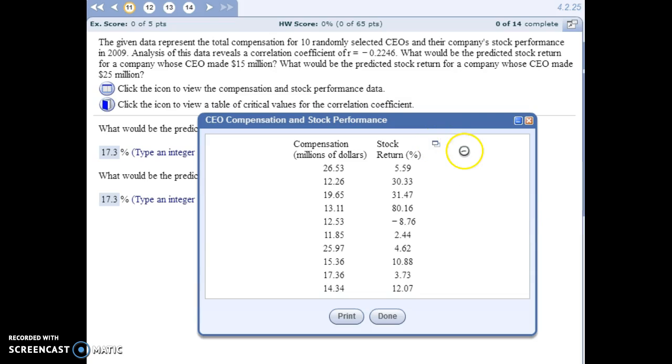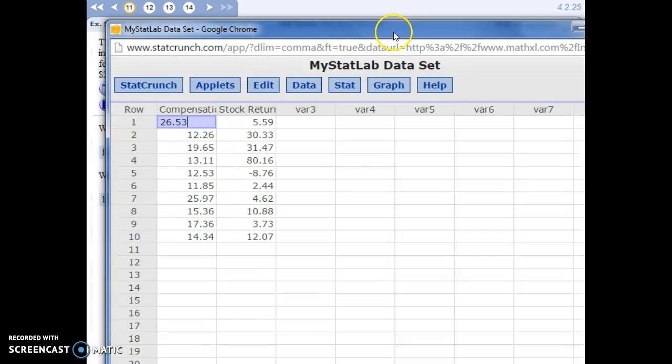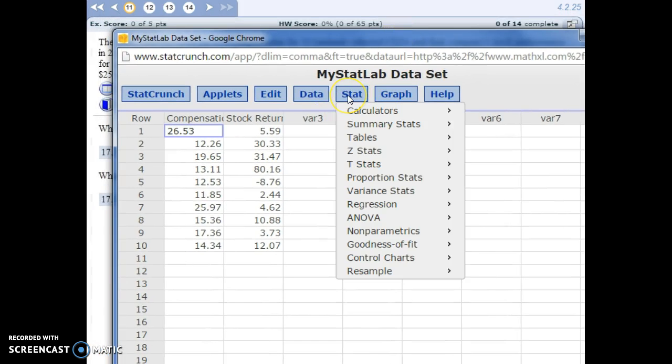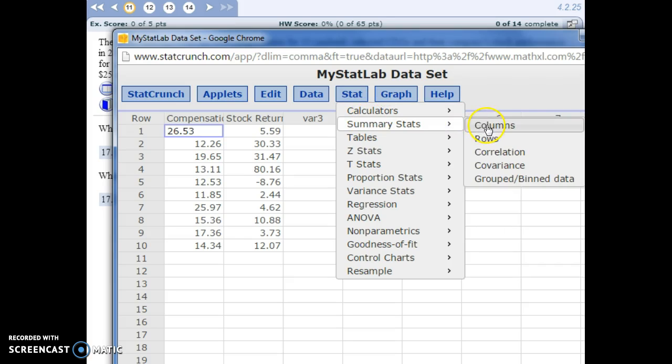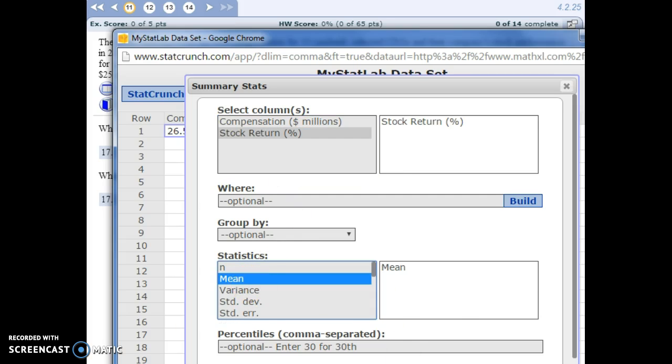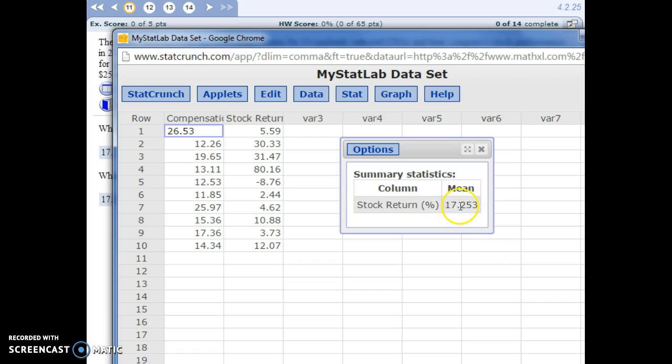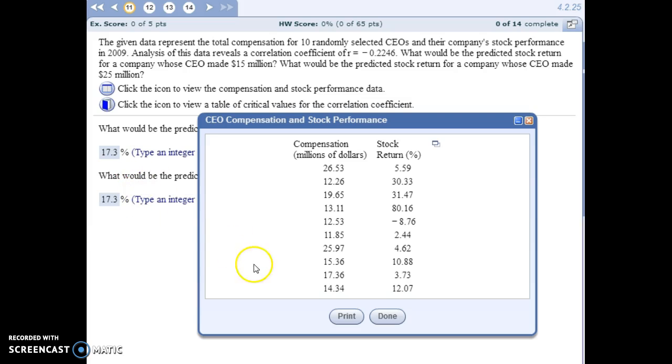So if we jump into StatCrunch, you can do averages in Excel as well, or you can work it out by hand. And let's see, we want summary stats on a column. We're just going to do the stock return and find the mean. So since there was no linear relationship, we're just going to use that mean, that average stock return for all our predictions.